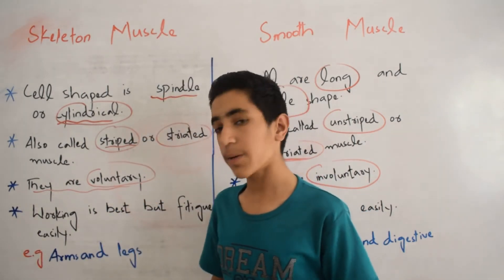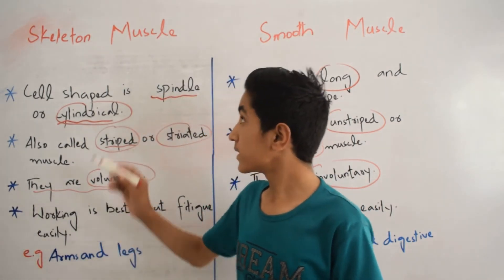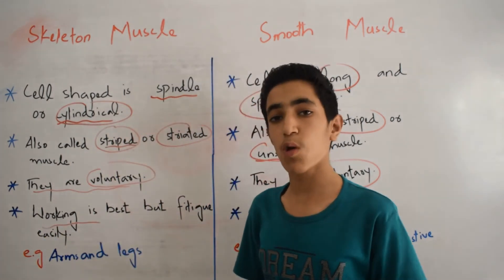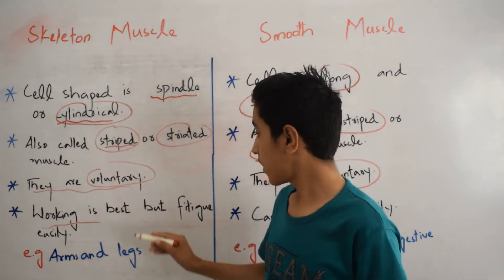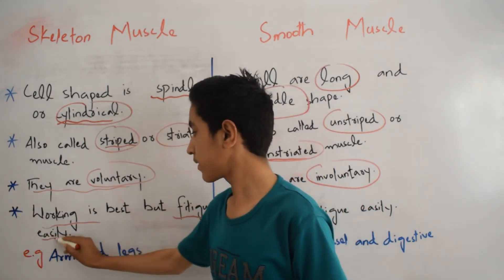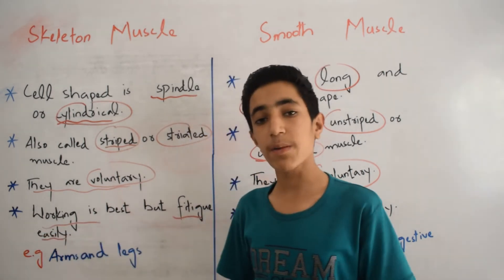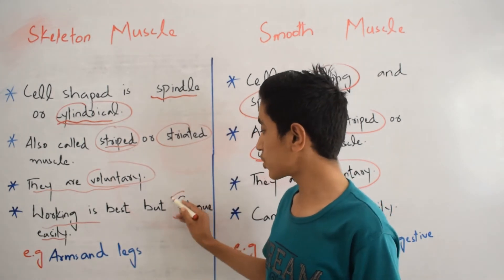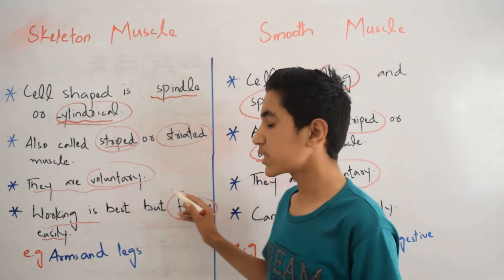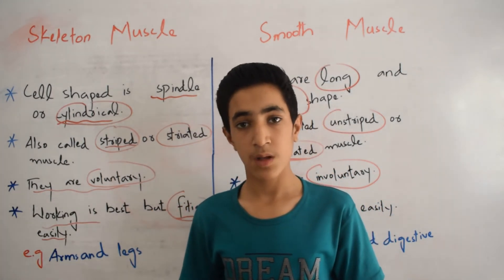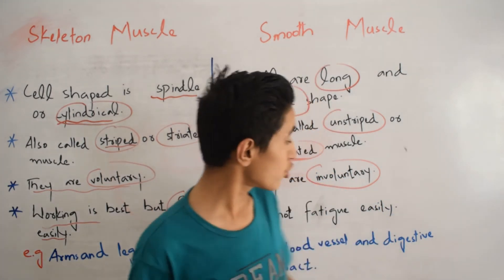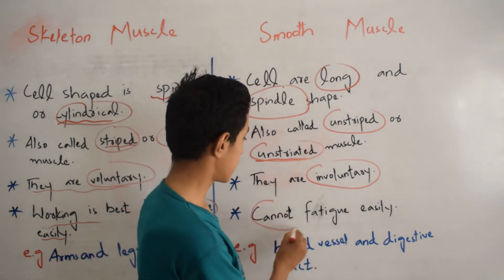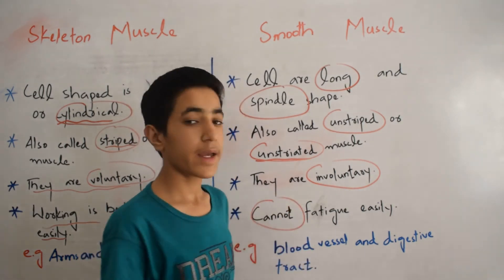The last difference is that skeletal muscle works best but fatigues easily. Fatigue means tiredness — after doing work, they perform best but will tire easily. While smooth muscle also works best but cannot fatigue easily; they do not tire easily.